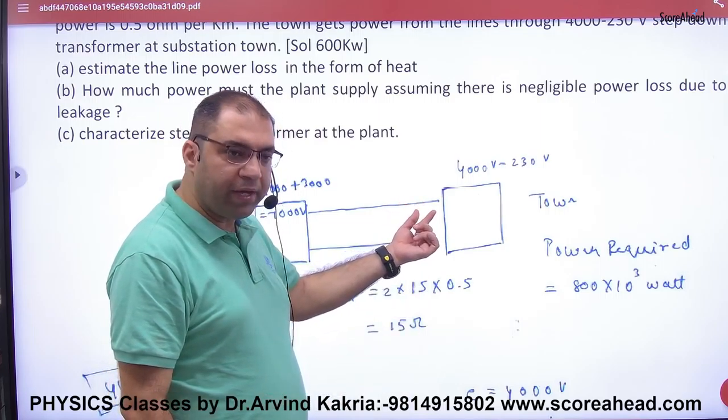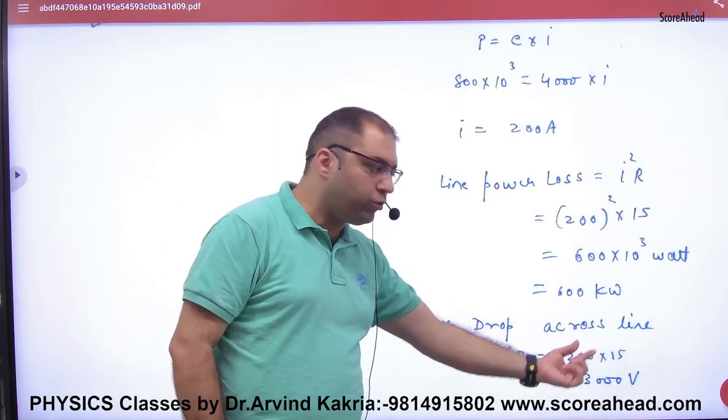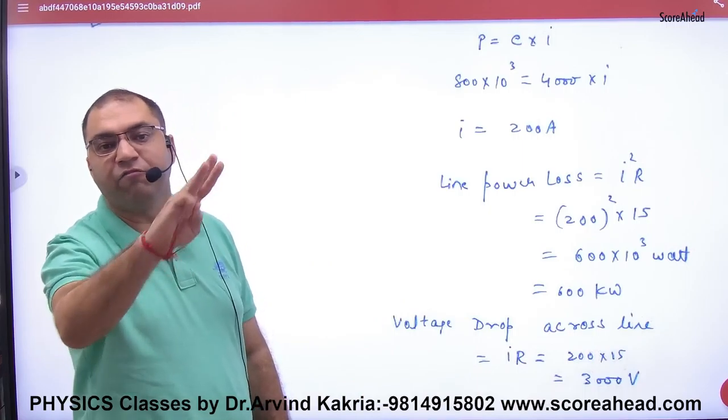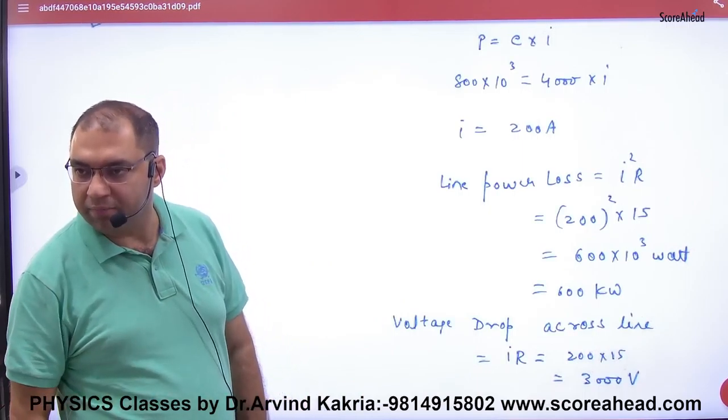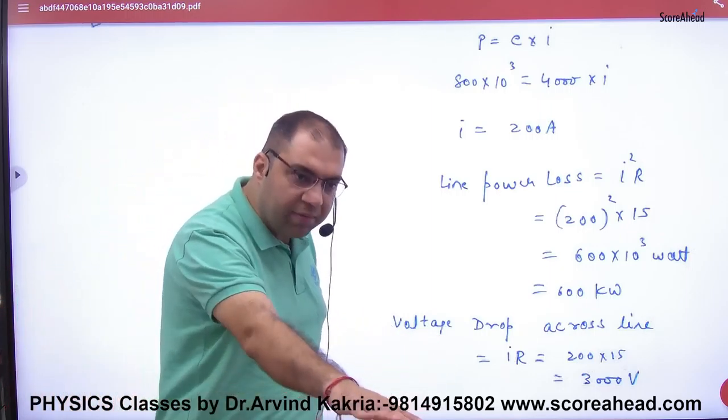Resistance is 15 ohm. Potential drop is 200 into 15, which is 3000 volts. So 3000 volts will drop.